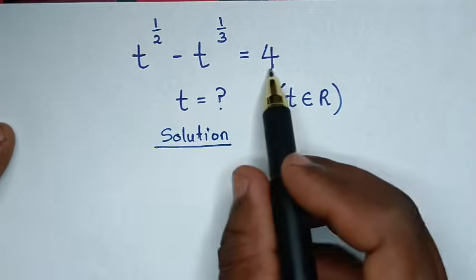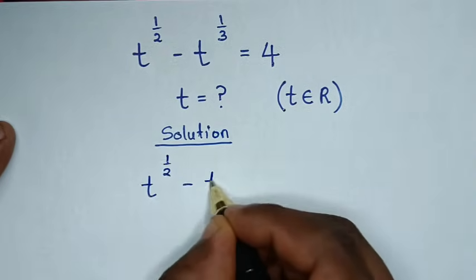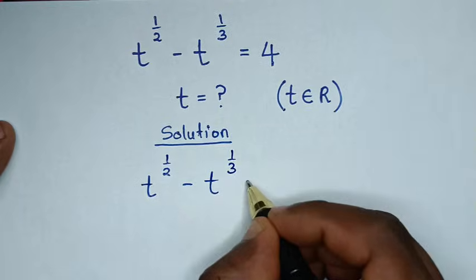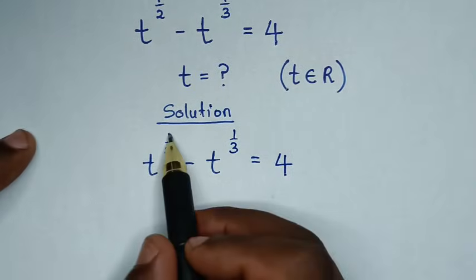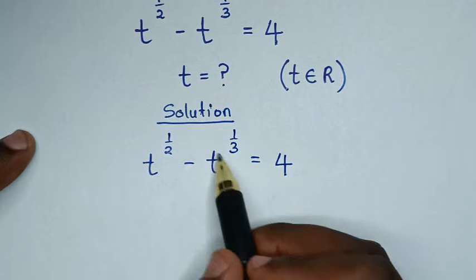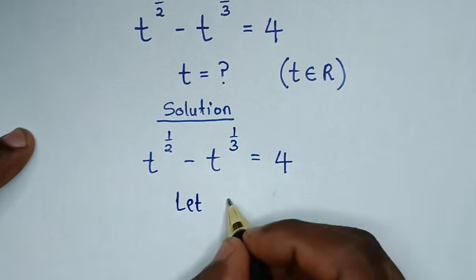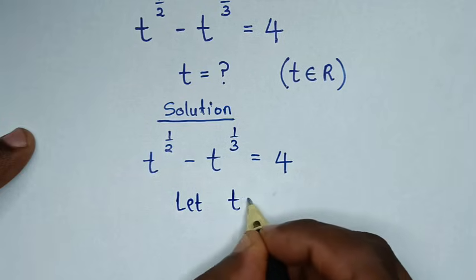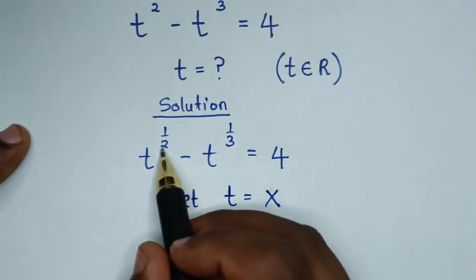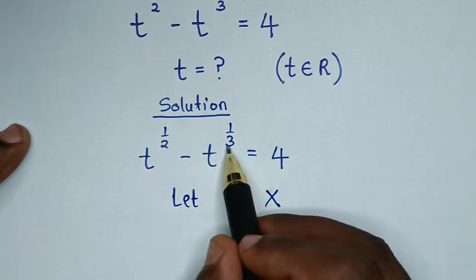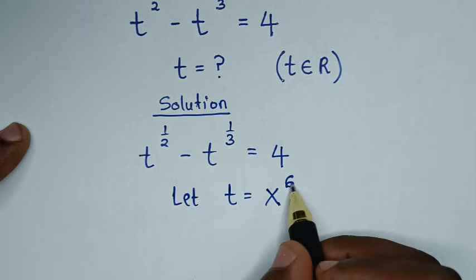From this problem, t to the power of one half minus t to the power of one third equals 4. In the first step, we remove the fractions in the powers. We let t equal to x. Into the powers, we multiply 2 times 3, which is 6. So we let t equal to x to the power of 6.